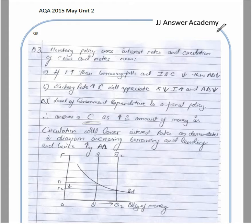The level of government expenditure is a fiscal policy, so that will fall as well. The answer is C, because an increase in the amount of money in circulation will lower interest rates.